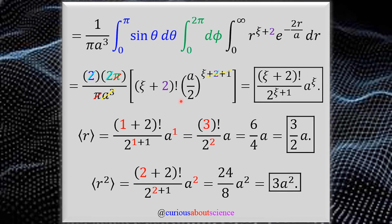Using this general form, we can simplify quite fast for the ground state. The (ξ+2) factorial stays put. We notice that a^(ξ+2+1) = a^(ξ+3) cancels with the a³ in the denominator — highlighted in yellow. The two factors of two in the denominator also cancel with the two in the numerator. All of this reduces quickly to a general form: (ξ+2)! / 2^(ξ+1) times a^ξ.